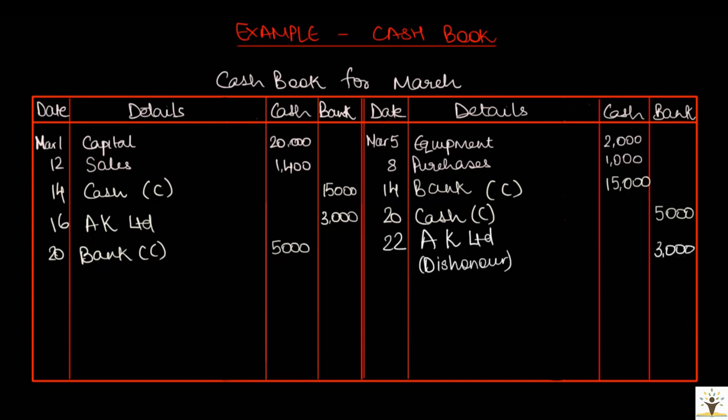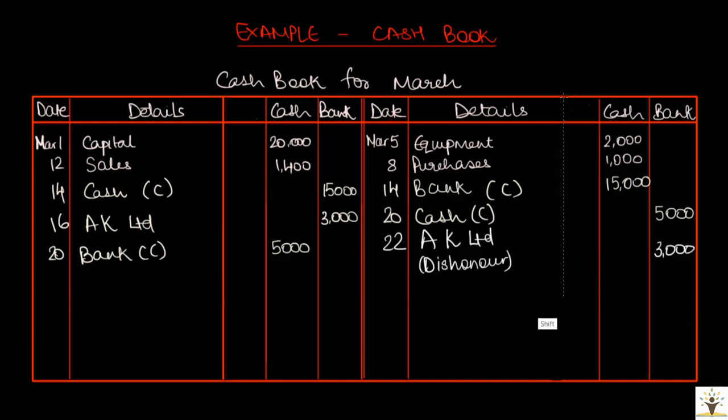What we have seen here is the two-column cash book. Most firms will maintain a three-column cash book that includes an additional amount column on each side to record the cash discounts. The debit side of the cash book will have a discount allowed column, and the credit side of the cash book will have the discount received column.